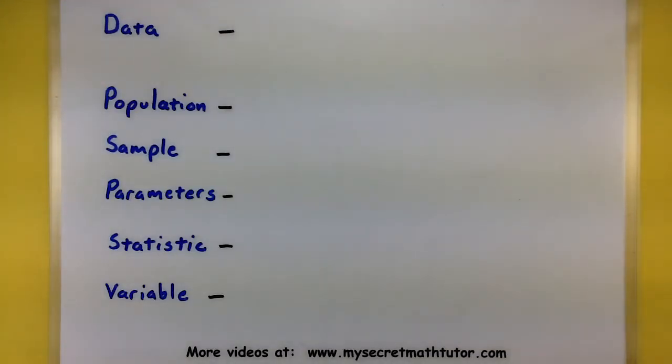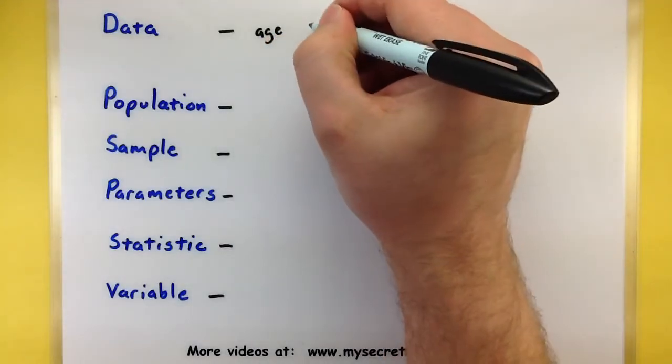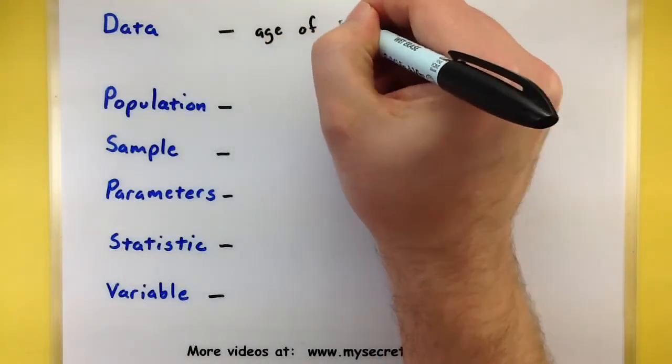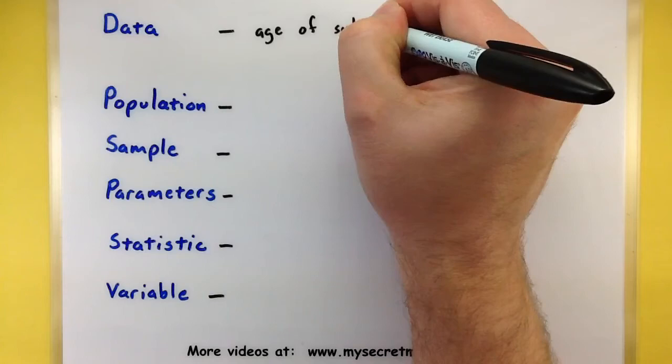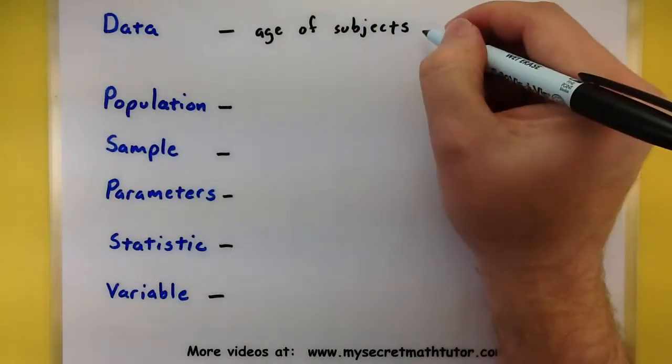So, the first part that we will do is probably collect a lot of data for our survey. And some of the things that we might collect, well, we'll probably want to know what is the age of our subjects.